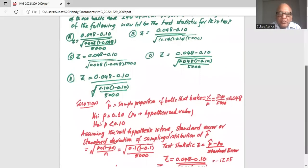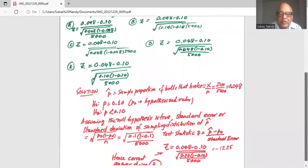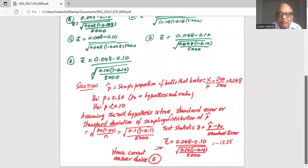Assuming the null hypothesis is true, the standard error or standard deviation of the sampling distribution of P hat is given by square root of P0 times 1 minus P0 divided by n, which in our case will be square root of 0.1 multiplied by 1 minus 0.1 divided by 5000.